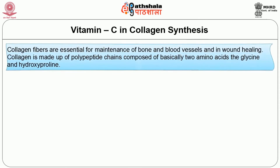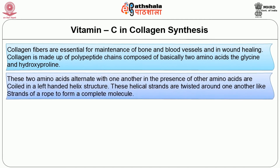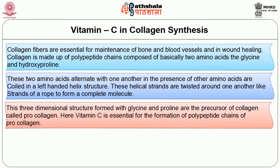Collagen fibers are essential for maintenance of bone and blood vessels and in wound healing. Collagen is made up of polypeptide chains composed of two amino acids — glycine and hydroxyproline. These two amino acids alternate with one another in the presence of other amino acids and are coiled in a left-handed helix structure. These helical strands are twisted around one another like strands of a rope to form a complete molecule. This three-dimensional structure formed with glycine and proline is the precursor of collagen called procollagen. Vitamin C is essential for the formation of polypeptide chains of procollagen.